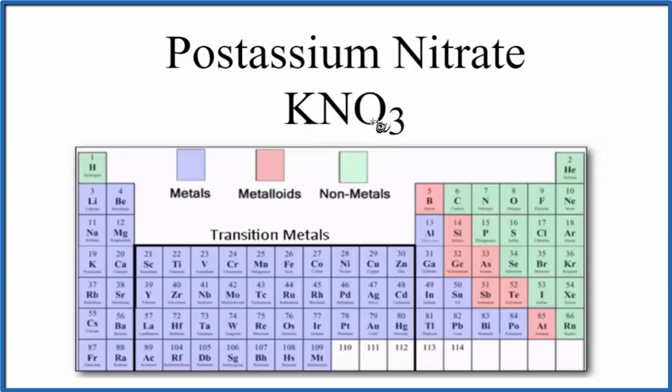For KNO3, if we look at potassium on the periodic table right here, that's a metal, and then nitrogen and oxygen are both nonmetals. We have a metal and nonmetals, so we have an ionic compound almost all the time.